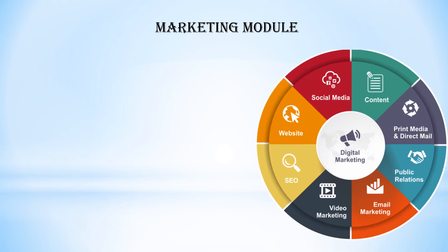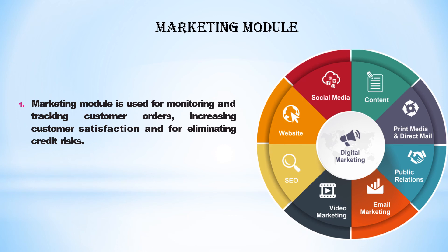Next is the marketing module. There is a simple diagram of digital marketing. Here you will see which market is available, which products are available, and what the demand is. All things in this marketing module include SEO, website, video marketing, email marketing — all kinds of marketing will be available. In this module you will see the customer, attract customer satisfaction, and handle issues like credit risk.